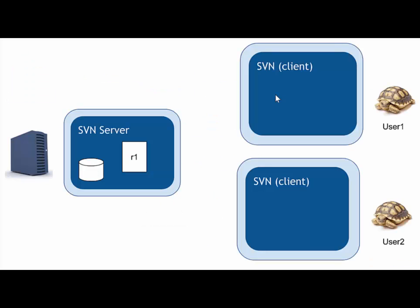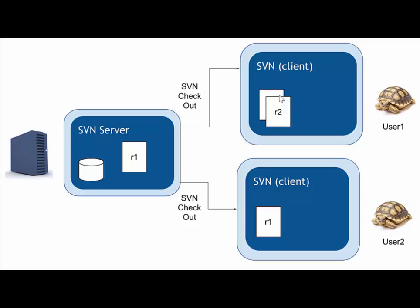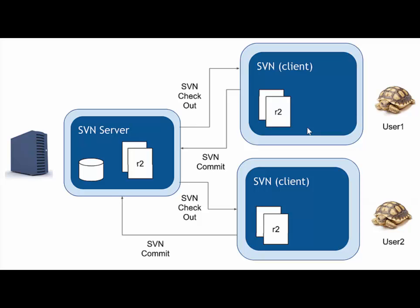Two people will be working on the same file and try to commit changes to the same file on the repository at the same time — and that's when we get a conflict. Two users have checked out the contents from the repository and might have revision 1 of a particular file. User 1 modifies that file, it now has revision 2, and commits that change to the repository. User 2 meanwhile makes their own changes and has their own revision 2, different from user 1's. They try to commit those changes, and the SVN server warns that those changes from user 2 will overwrite user 1's changes to the same file. So it stops the second user from making that commit and warns you that there's a conflict.